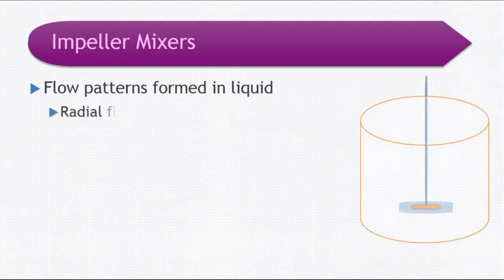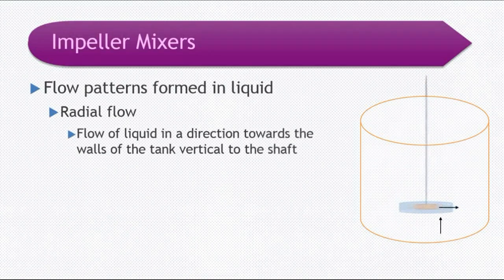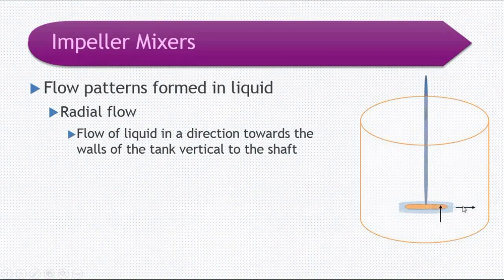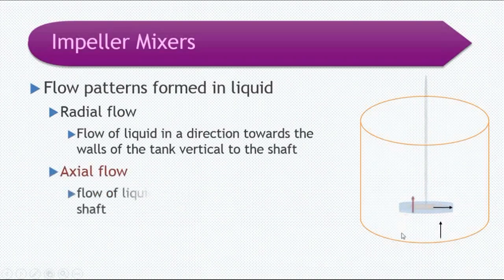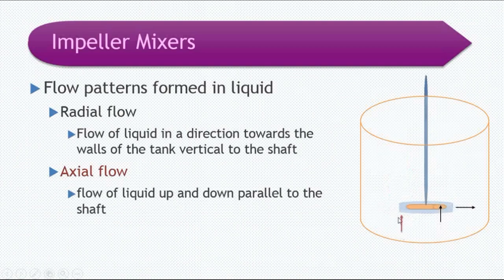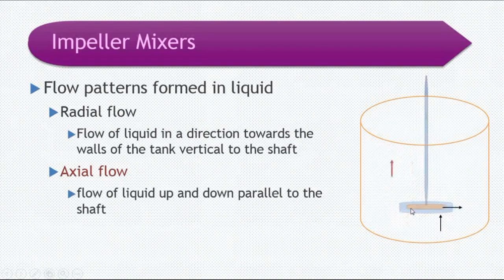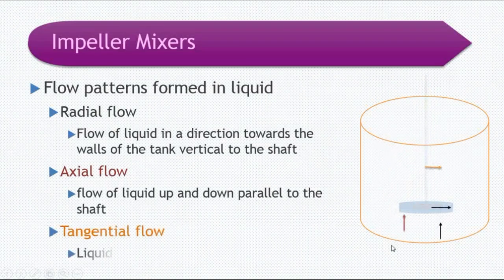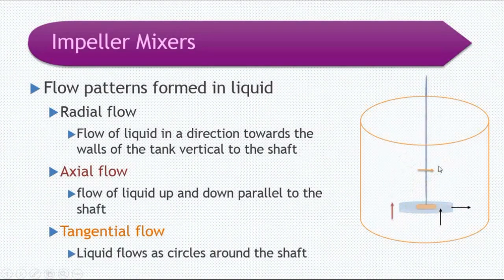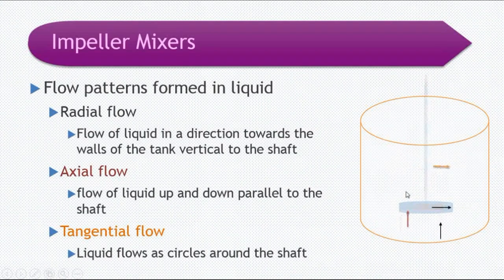In radial flow, you can see in the animation that flow of liquid takes place in a direction towards the wall of the tank, perpendicular to the shaft of the impeller. In axial flow, liquid flows up and down parallel to the shaft of the impeller. In tangential flow, liquid flows in circles around the impeller shaft.